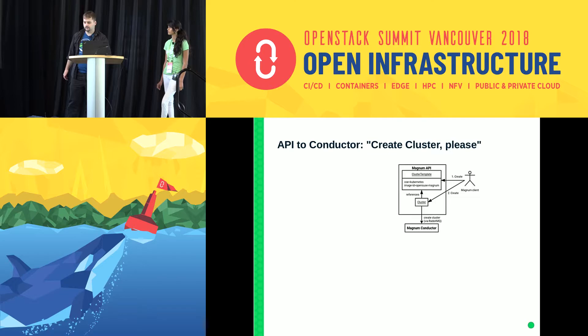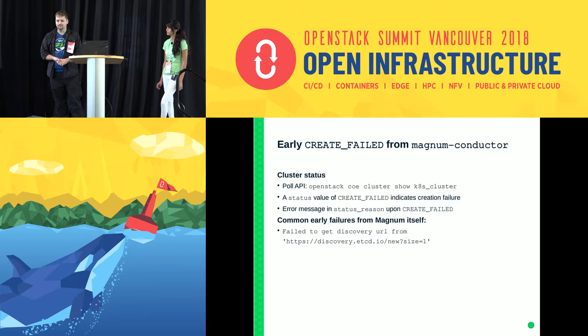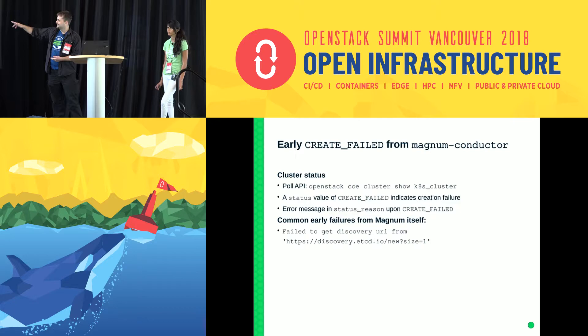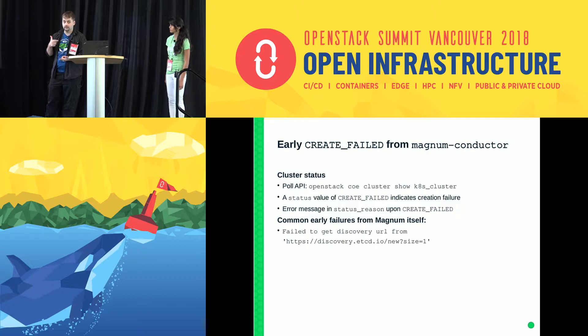Once past that, Magnum conductor performs a few sanity checks before generating a Heat template. One thing it does is obtain an ETCD discovery URL from the ETCD registry. By default it uses the public ETCD registry, and in an enterprise network that doesn't have access to the internet, you'll see an error message because Magnum cannot access this ETCD discovery URL. The solution is to either create a local ETCD discovery service for your cloud to use, or grant internet access to the cloud where Magnum is running.